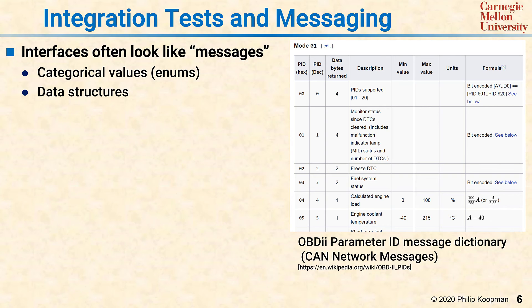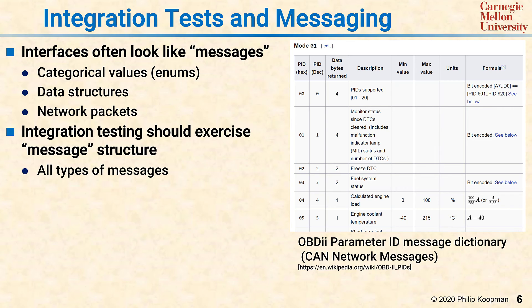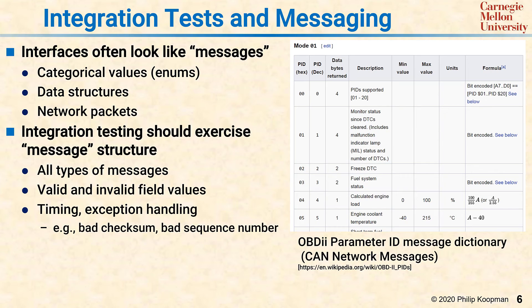As an example, if the enum says it's an engine speed, then there might be an integer afterwards that is in tens of RPMs or what have you. Integration testing should exercise the message structure. It should test all types of messages, a range of values inside fields, valid and invalid field values, and invalid message types. It should also test the timing and exception handling.